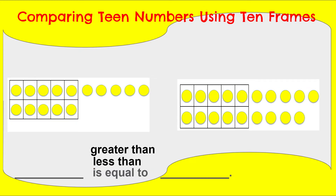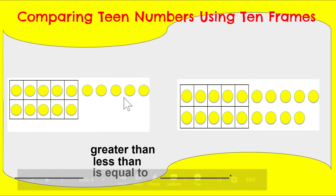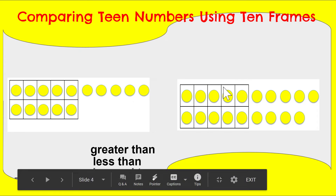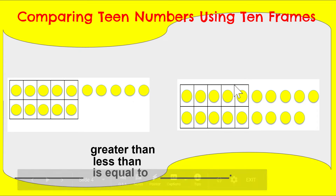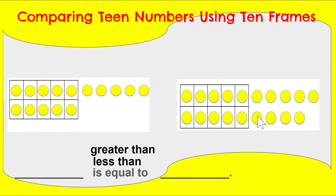Here's our next practice. I know how many are here — 10. And I count on: 11, 12, 13, 14, 15. I have 15 in this group. And in this group over here, how many are here? 10. And count on: 11, 12, 13, 14, 15, 16, 17, 18, 19. So I have 15 in my first group and 19 in my second group.